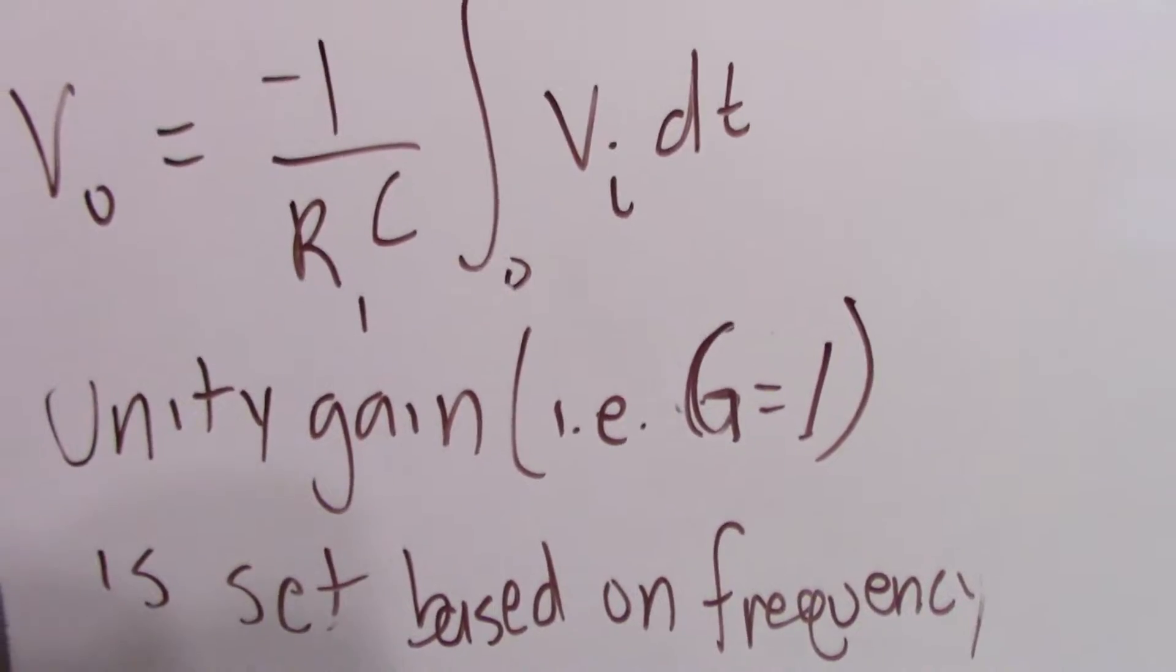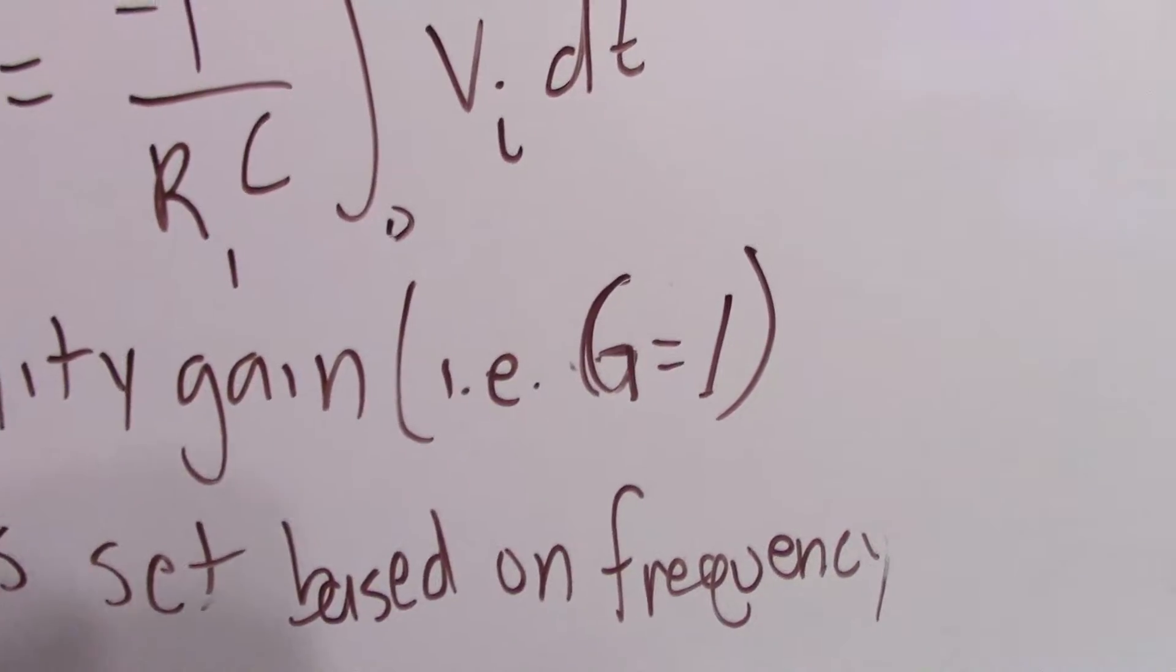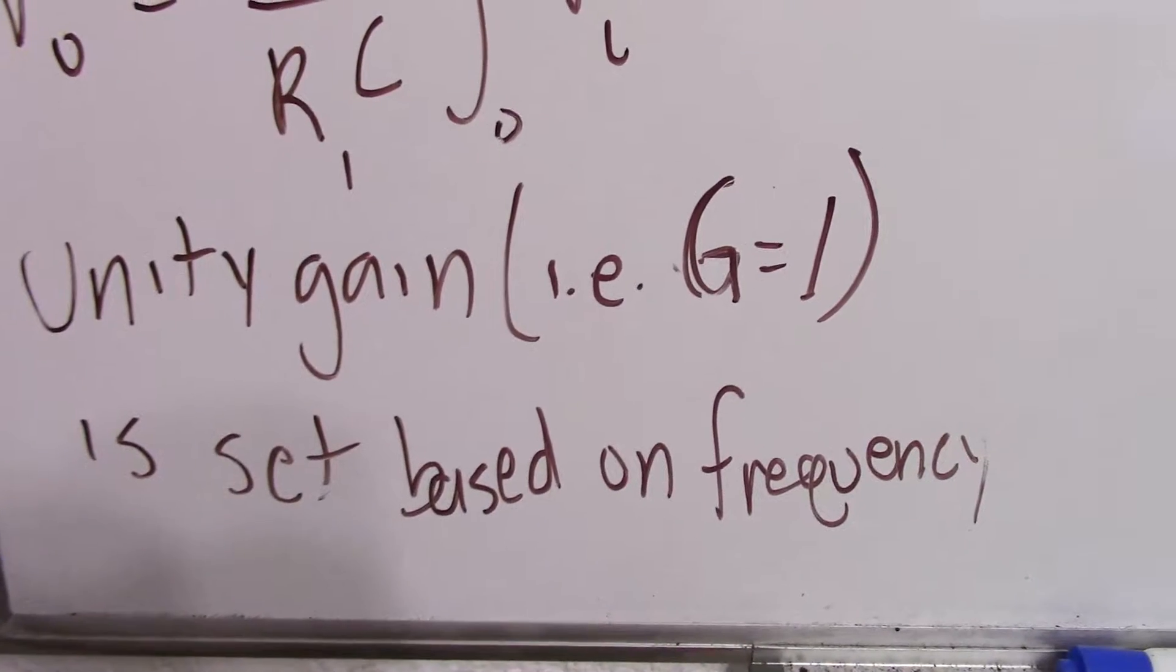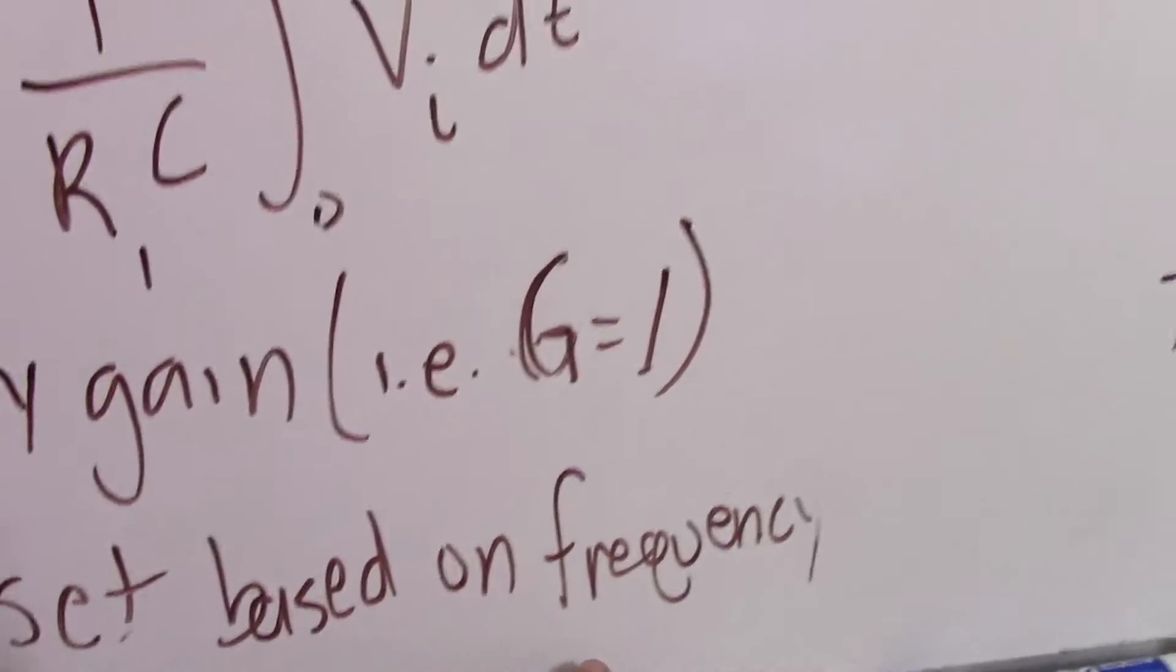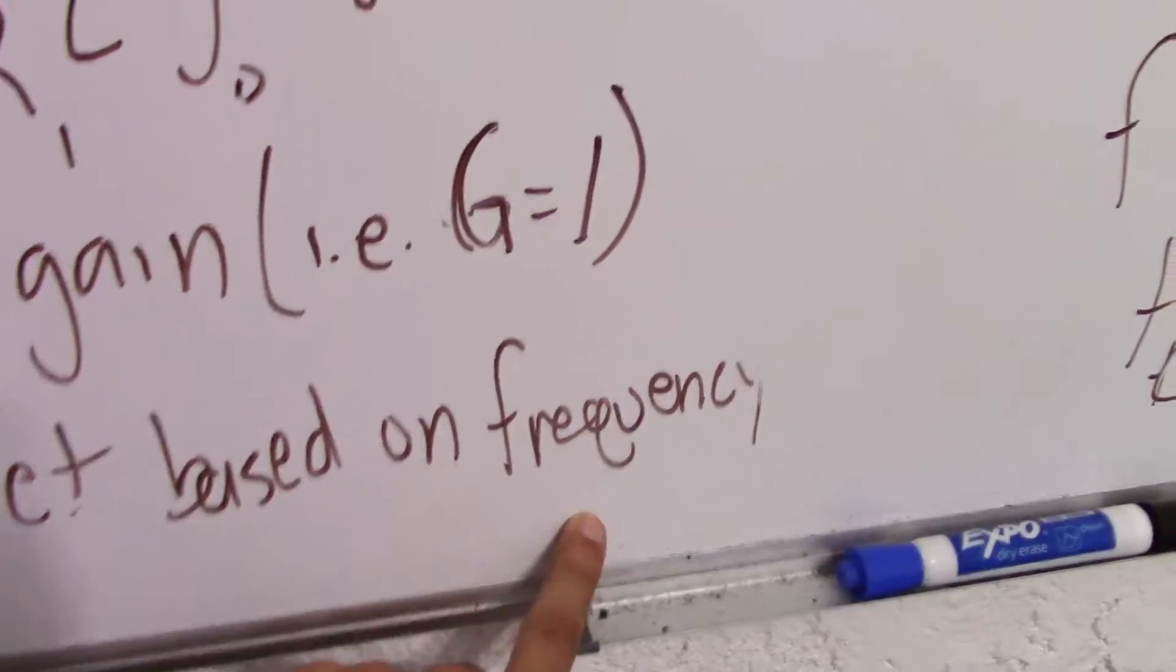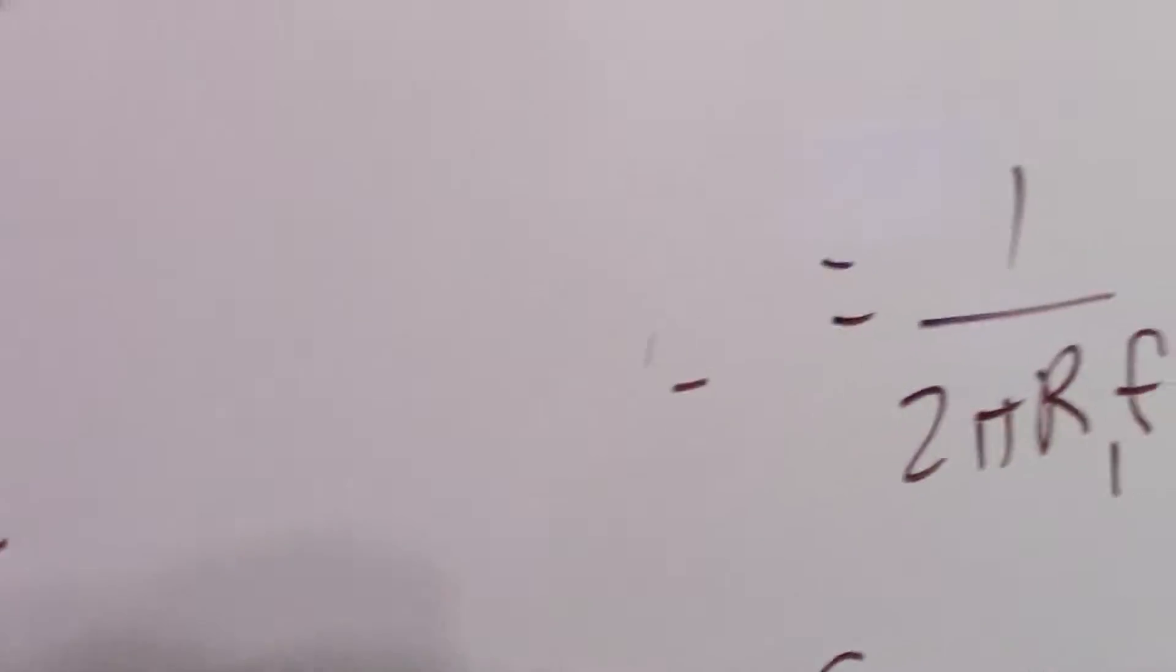I wanted to use the unity gain or the gain of one at, let's say, one kilohertz. Unfortunately, I don't have a capacitor that large or that small. I really can't set the gain based on the frequency, so I have to set it based on the capacitor.